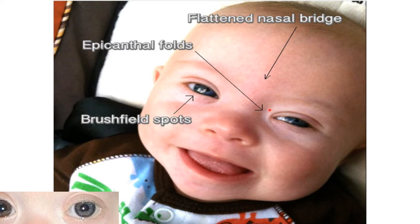Down babies also show an epicanthal fold — an extra skin fold over the upper eyelid — and Brushfield spots, which are bright spots in the iris, as beautifully shown in this diagram.